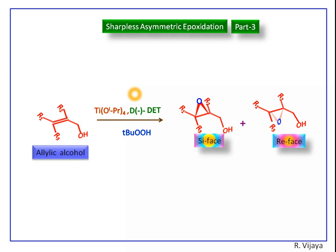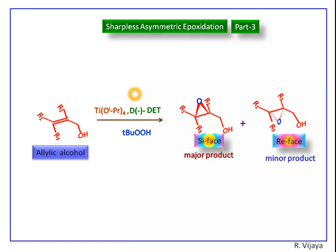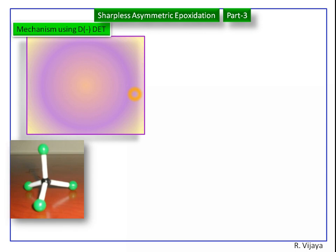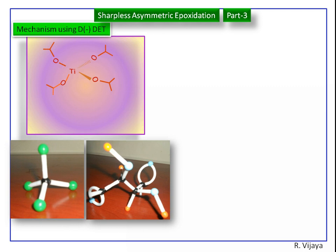So we get si-face attack of epoxide as the major product. This is the titanium tetra-isopropoxide having the tetrahedral structure. This is minus DET, that is diethyl tartrate.